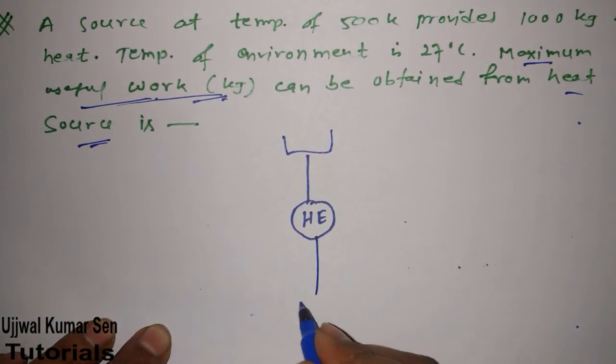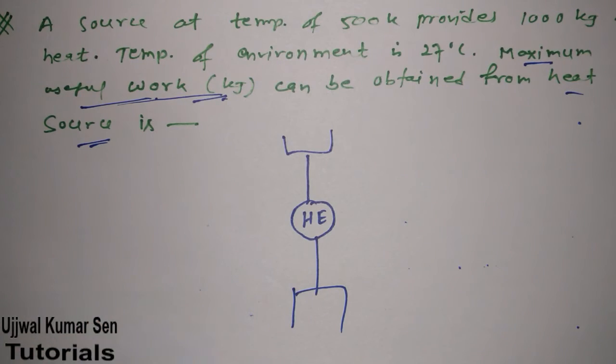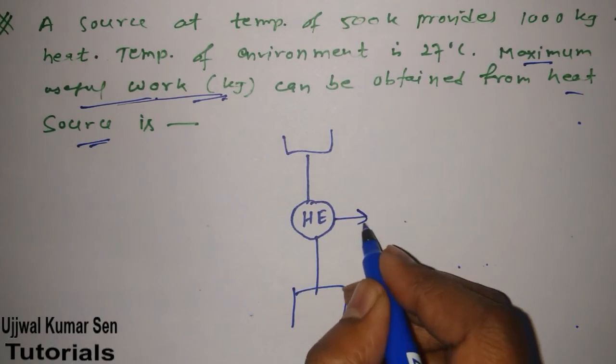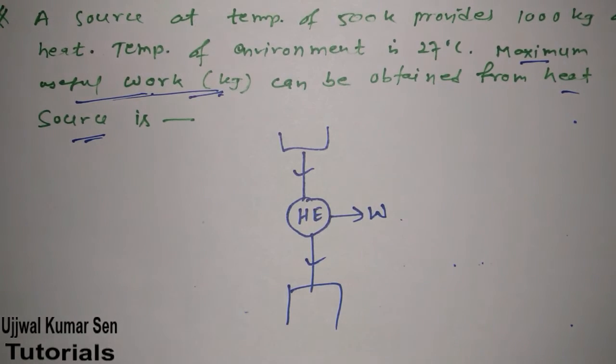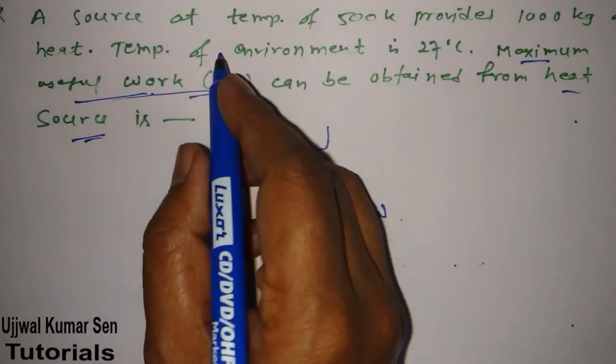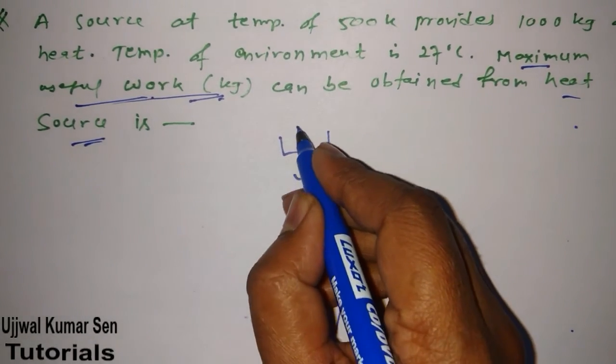Draw the diagram and find out what they've given. They said source, so source temperature is 500 Kelvin and provides 1000 kilojoules.